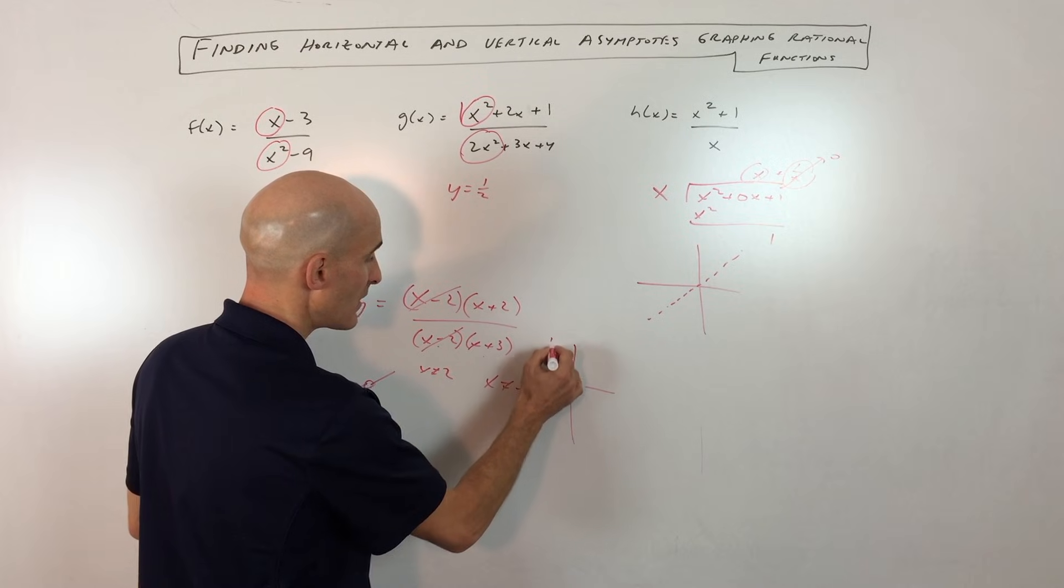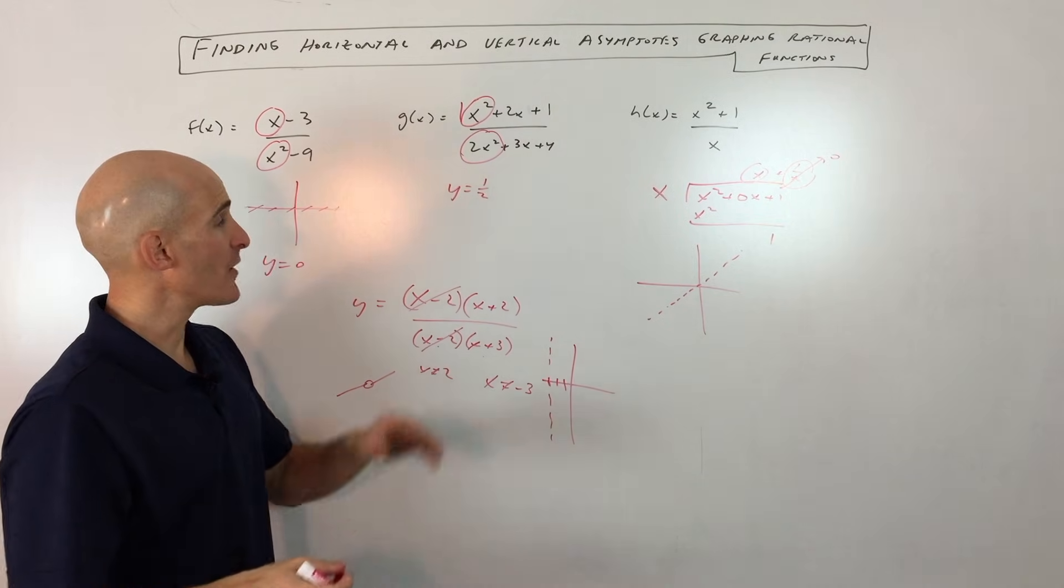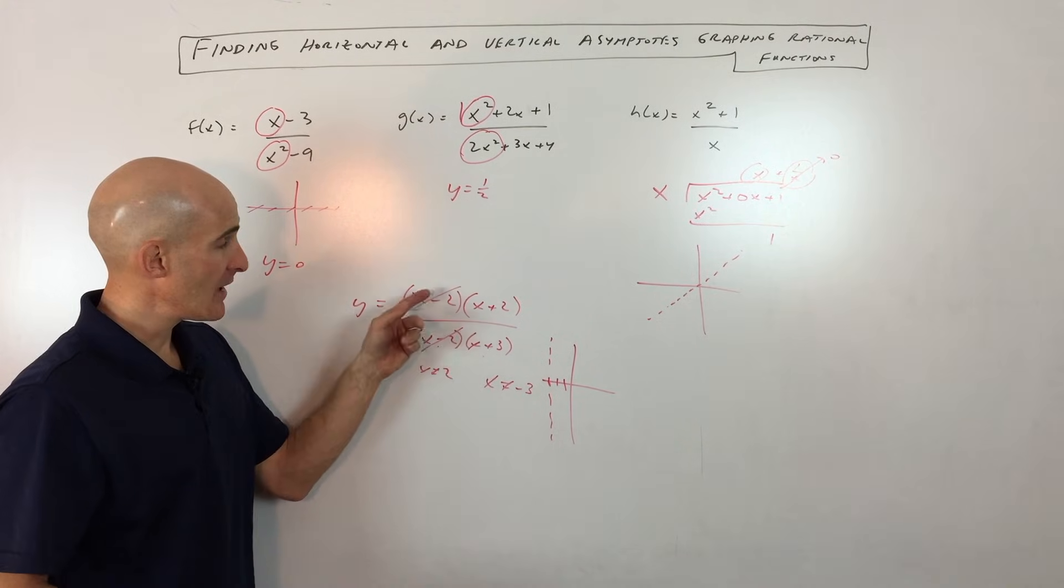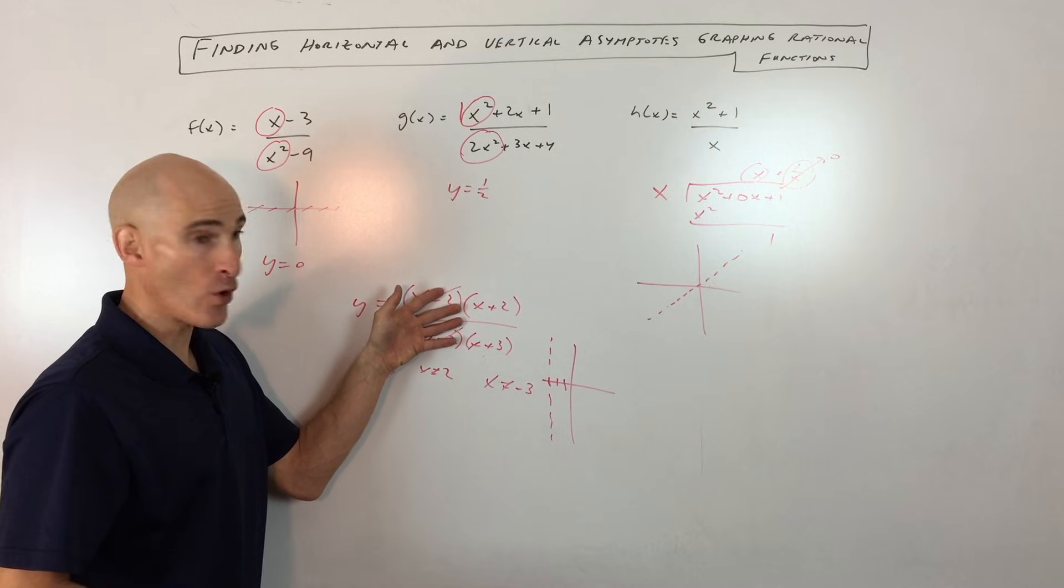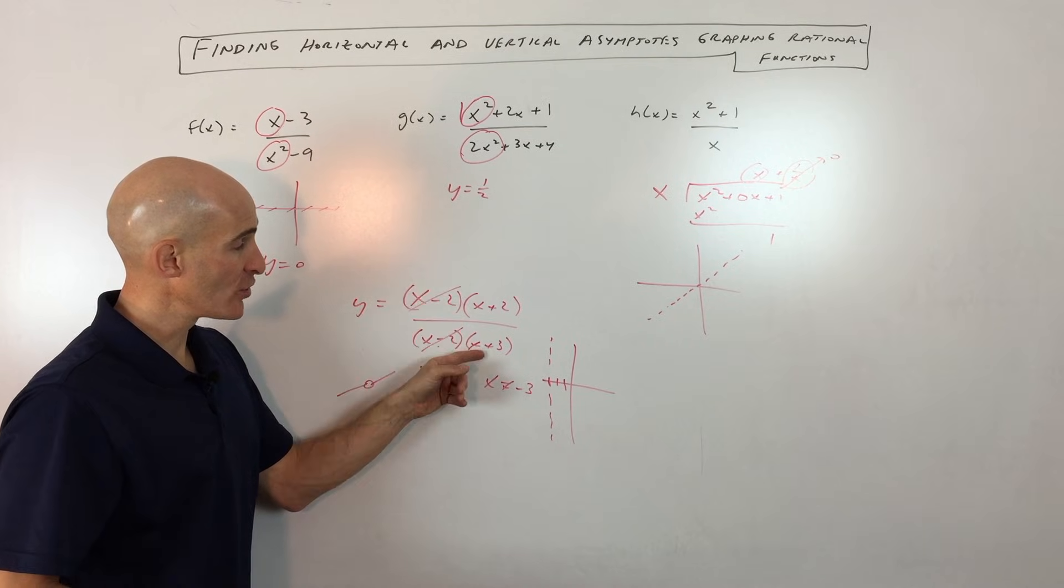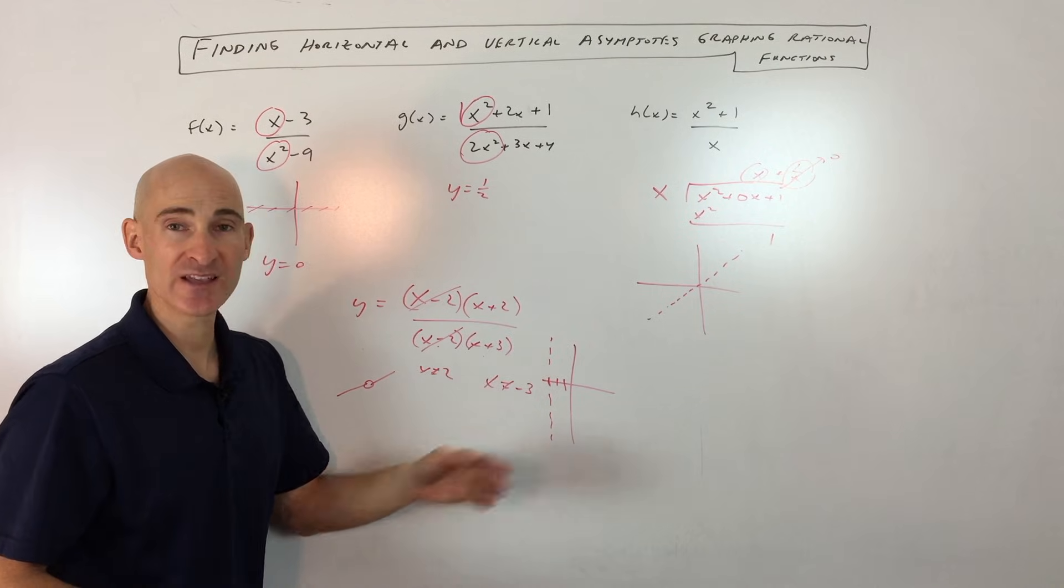So you're going to have a vertical asymptote at x equals negative 3. That's going to be 1, 2, 3, and there's your vertical asymptote. So the key is you want to factor the numerator and denominator. If any factors cancel out, you don't get a vertical asymptote at those values, you just get a hole. So we're going to cancel those out and look at the other denominator factors. x cannot be negative 3, and that's where your vertical asymptote occurs.